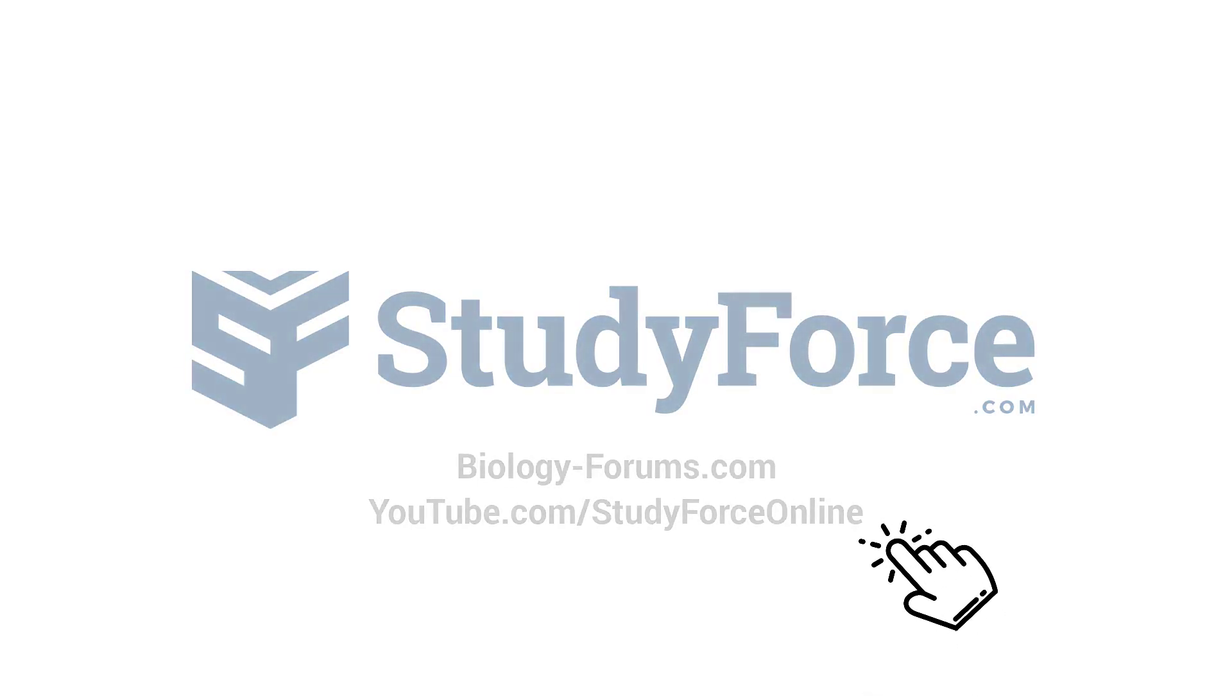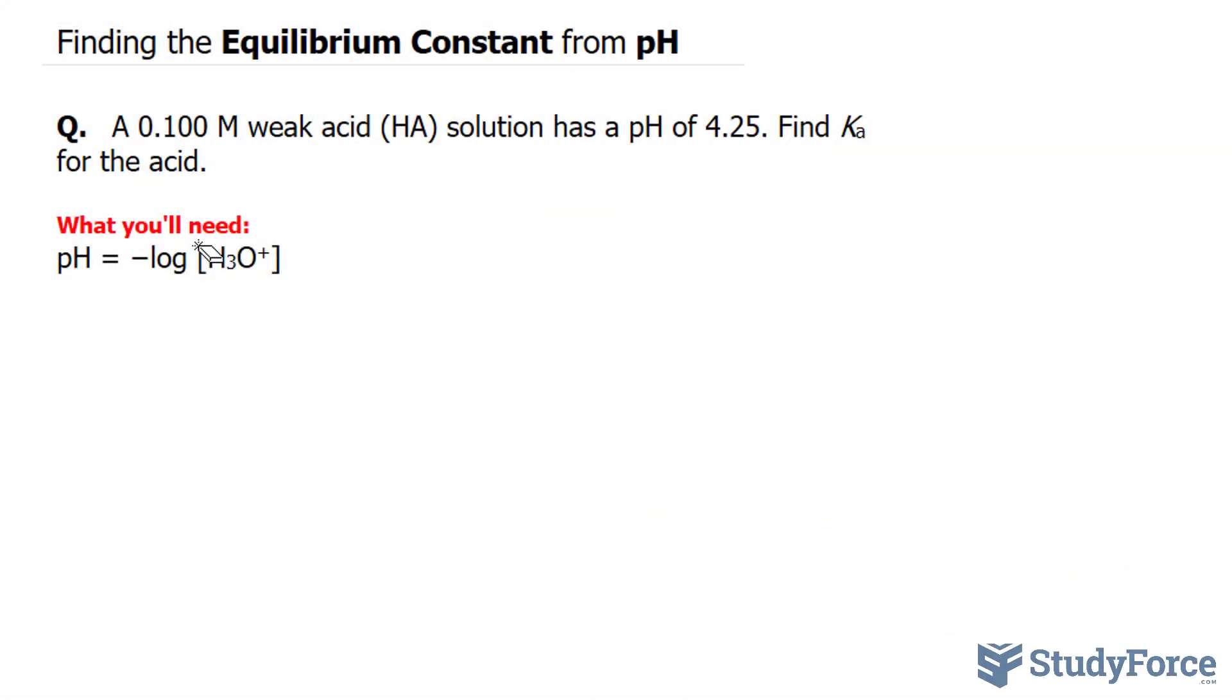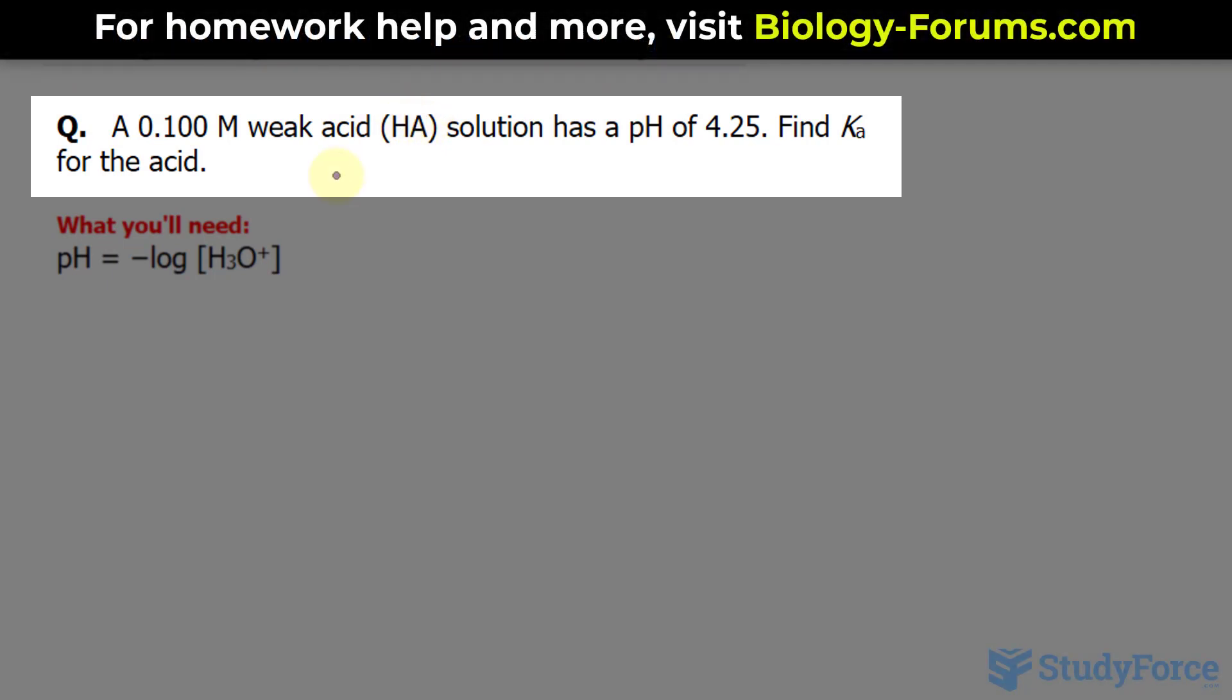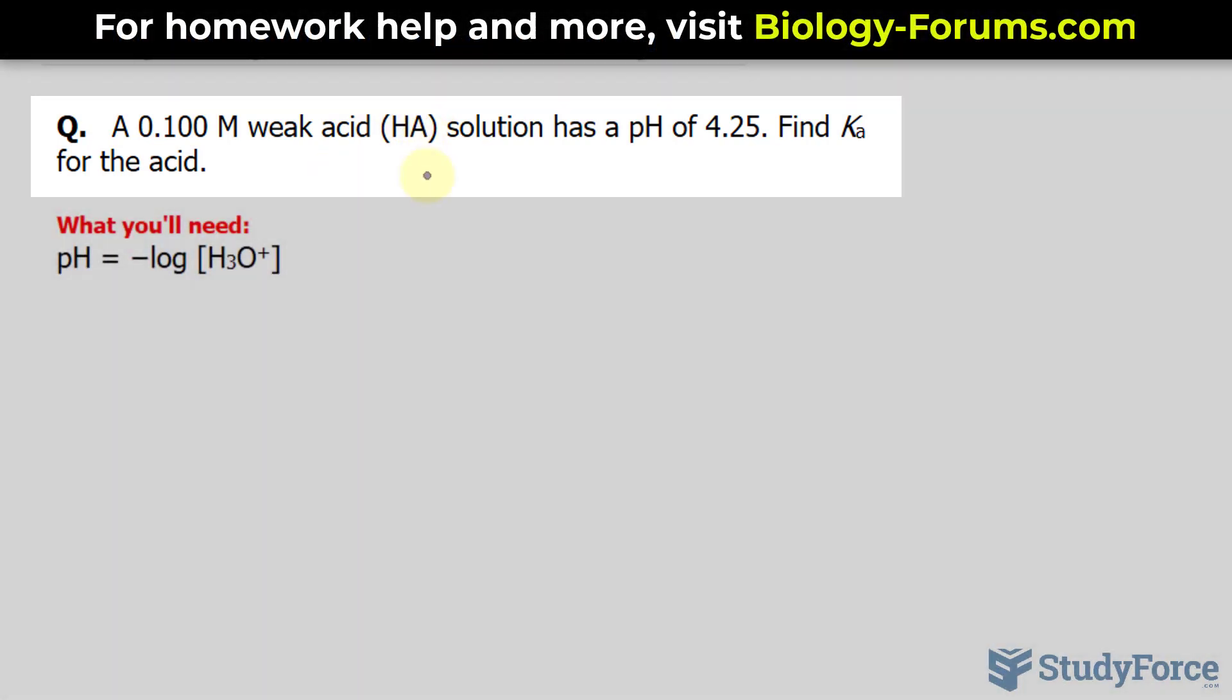In this lesson, I'll show you how to find the equilibrium constant from pH. The question reads: a 0.100 molar weak acid, represented as HA where H is the proton and A represents the acid, solution has a pH of 4.25. Find Ka for the acid.